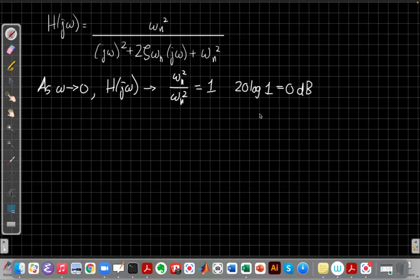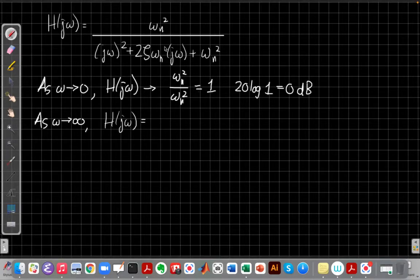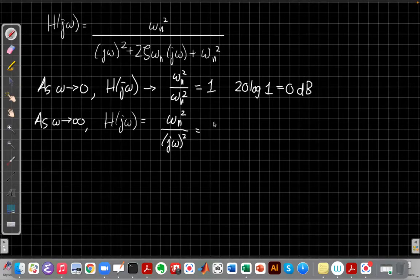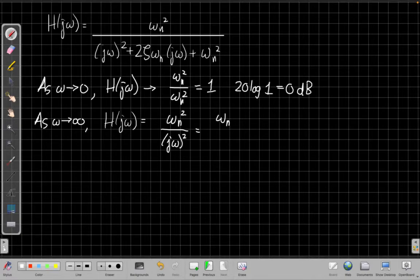So for low frequencies, we have a constant gain with zero dB. Let's think about what happens as ω goes to infinity. In that case, the numerator still just has this constant ω_n² in it, but the denominator term is dominated by the (jω)². As ω goes to infinity, the largest power of ω dominates, so we can ignore the ω term and the constant term, and we get something that's ω_n²/(jω)².